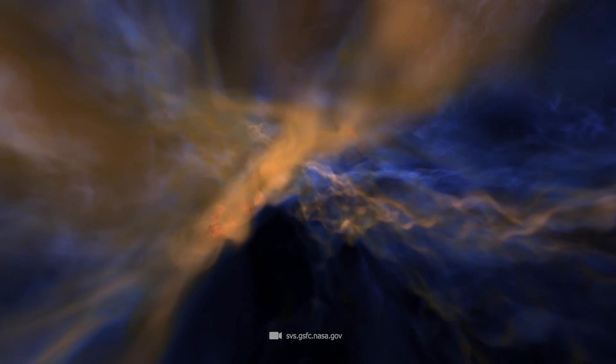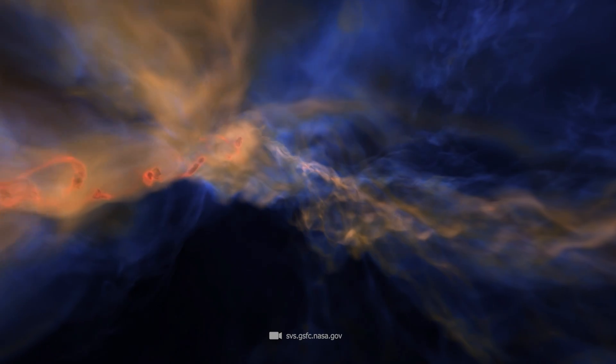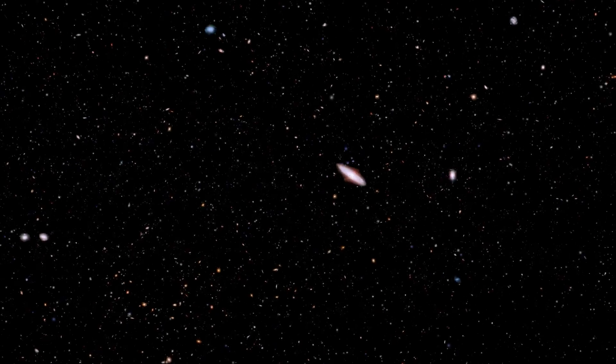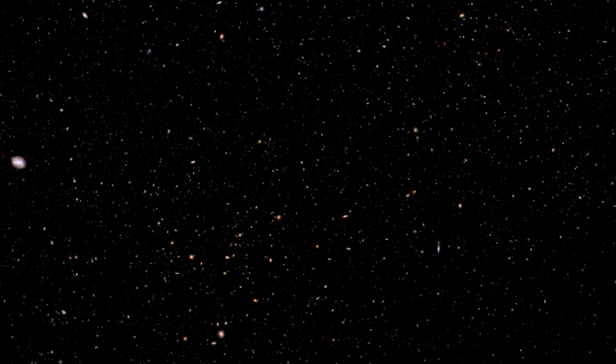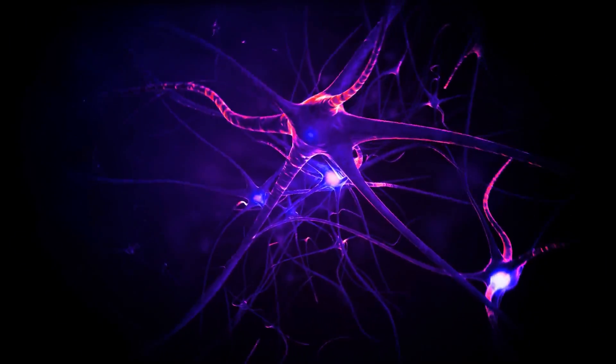The cosmic web threads are similar to axons, which transport information over great distances. The development of structures in the cosmos shows parallels to neurogenesis, or in other words, the development of our nervous system and our brains.